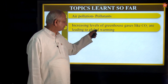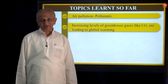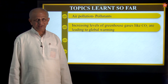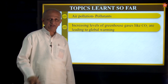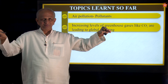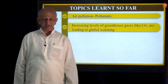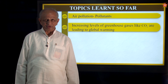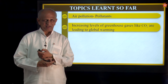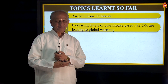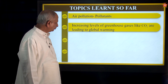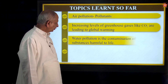Global warming happens due to excess gases like carbon dioxide. If there is excess carbon dioxide, it traps the heat radiated by earth. The heat that comes out from earth is trapped by the carbon dioxide layer, and hence the temperature of the earth globe increases — that is what is called global warming.